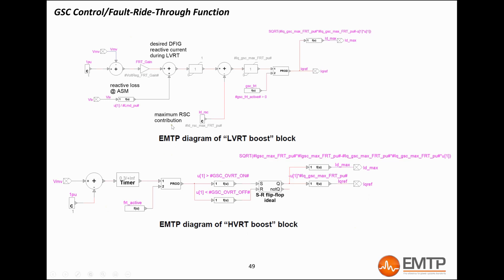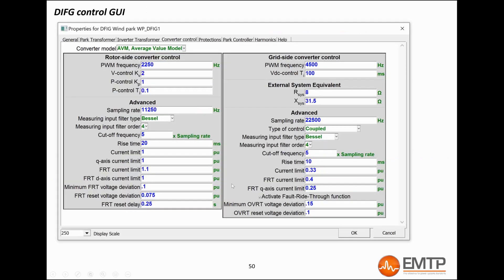During LVRT, the grid-side converter does not contribute before the maximum rotor-side contribution is reached. Then, it starts contributing with a proportional controller. The HVRT, also called OVRT like over voltage ride-through, is activated when the voltage goes above a certain threshold. All the FRT threshold can be found in the converter control data tab, as well as the parameters required by the inner and outer control loops.